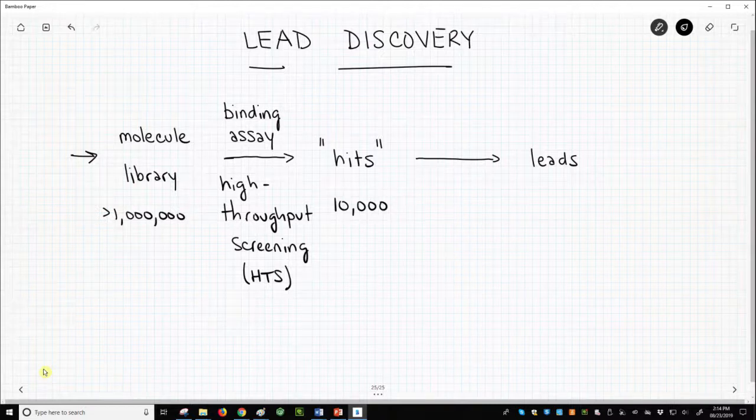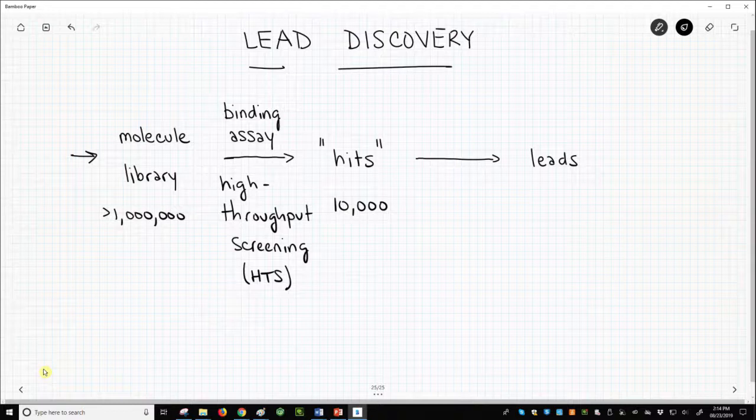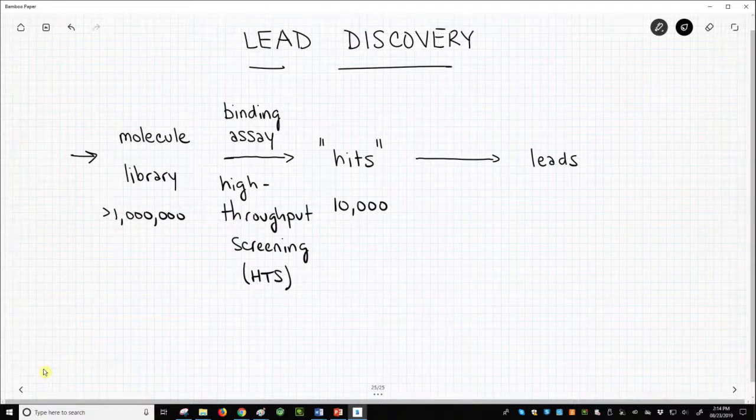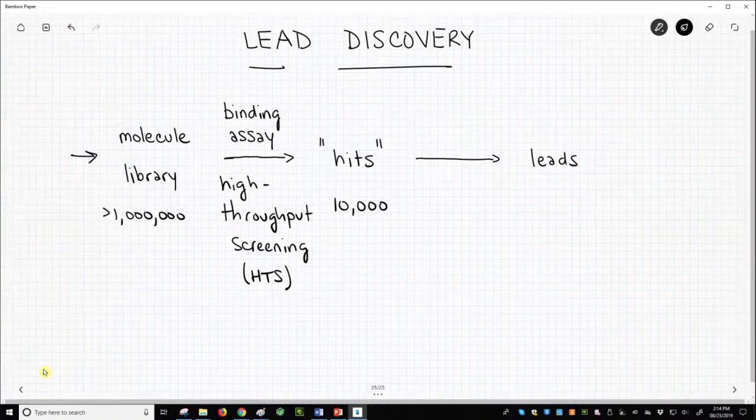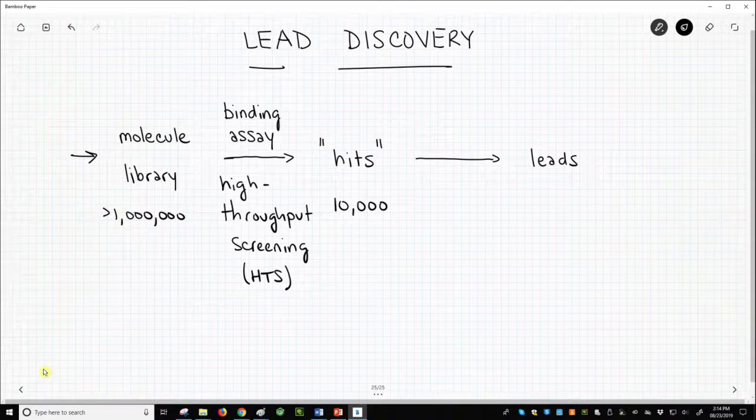These promising compounds are called hits and will be further scrutinized, not just for potency, but also their potential pharmacokinetic properties. There are actually high throughput screens that can predict a drug's ADME properties.